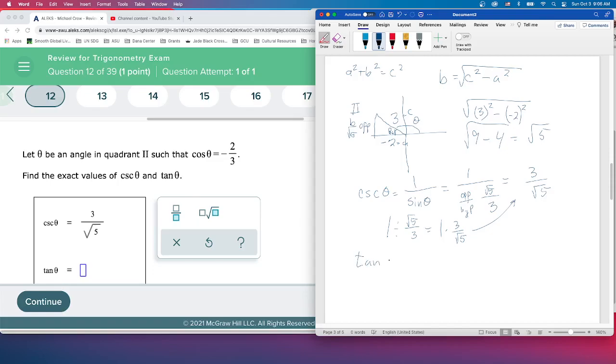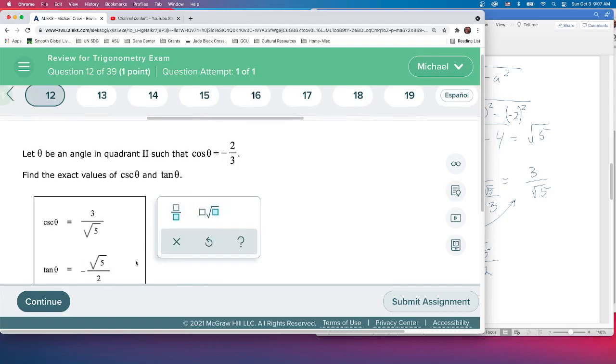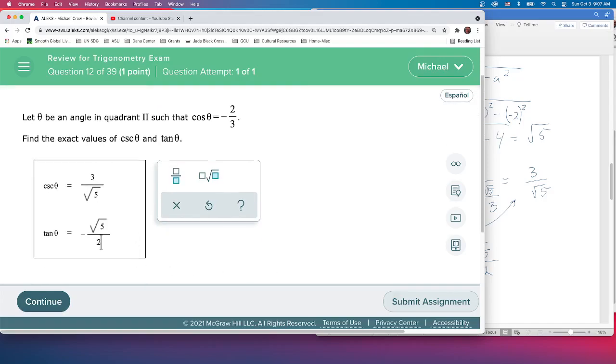The last one should be fairly straightforward. Tangent theta is opposite over adjacent. Remember, we're in second quadrant, so it should be negative. We're going to follow our triangle here: opposite is square root of 5, adjacent is negative 2. So that gives us negative square root of 5 over 2. We'll put our negative fraction: square root of 5 and 2. That's going to be our answer for number 12.